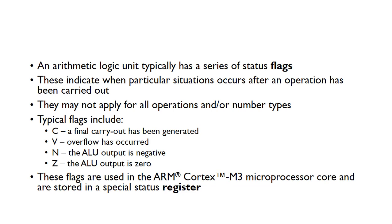An arithmetic logic unit typically has a series of status flags. These indicate when particular situations occur after an operation has been carried out. They may not apply for all operations or different number types. The typical flags we see are C, which tells us a final carry out has been generated; V when overflow has occurred; N when the ALU output is negative; and Z when the ALU output is zero. These flags are used in an ARM Cortex M3 microprocessor core and are stored in a special status register.